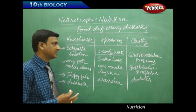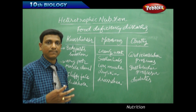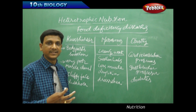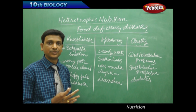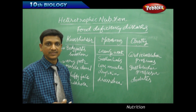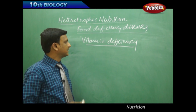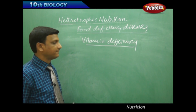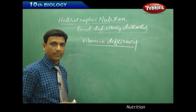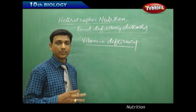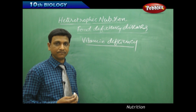Certain diseases are caused due to the deficiency of vitamins, because vitamins play a very important role in maintaining various activities in different body systems. Deficiency of a certain vitamin leads to a specific disease. Vitamins are important organic compounds that must be taken in our food because vitamins cannot be synthesized in our body.